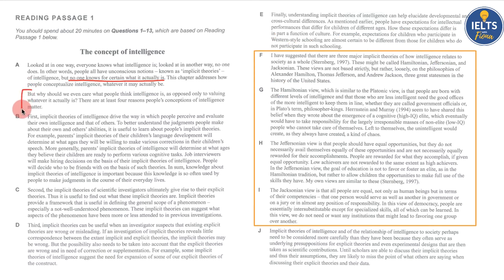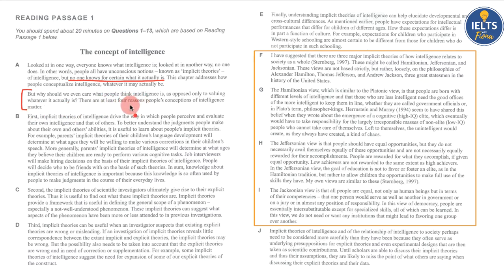Then there's a very clear question in the introduction: 'Why should we even care what people think intelligence is, as opposed only to valuing whatever it actually is?' The writer has told us he or she is going to outline four reasons why people's conceptions of intelligence are important and why they matter. The next four paragraphs are simply that: B says 'first,' C 'second,' D 'third,' and E 'finally' — those are the four reasons.